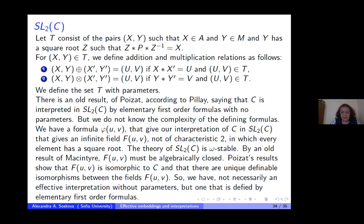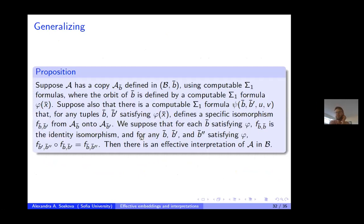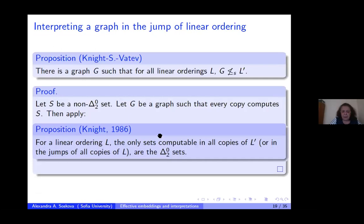Another question: you showed you can Medvedev reduce graphs to the double jump of linear orderings, but not the first jump. Can you Medvedev reduce every graph into the first jump of a linear ordering? No — we have an example showing that is not possible. The reason is that sigma-3 formulas are needed to define the set S in the linear ordering, which sends you to the second jump.